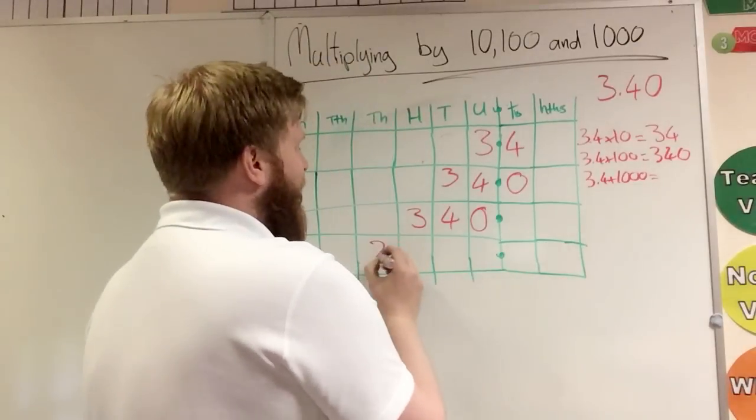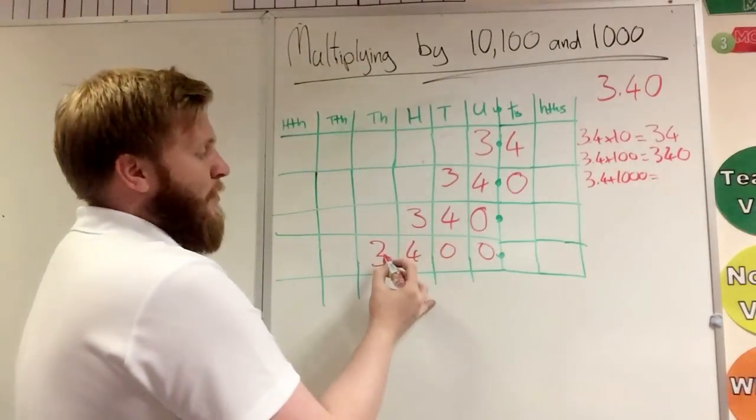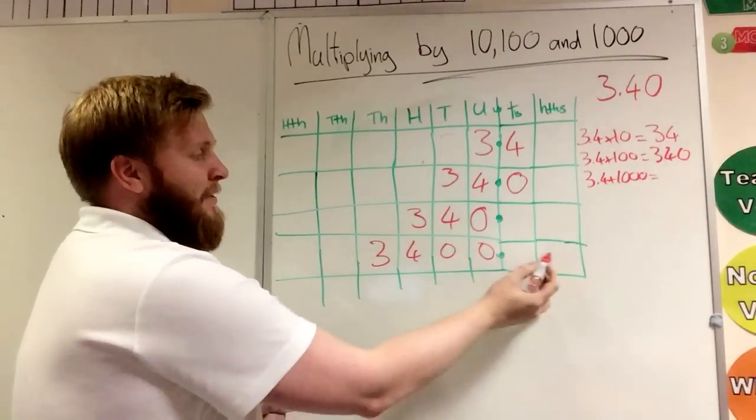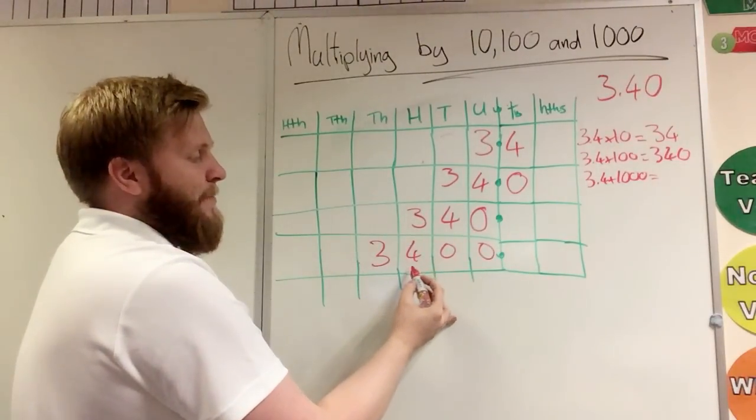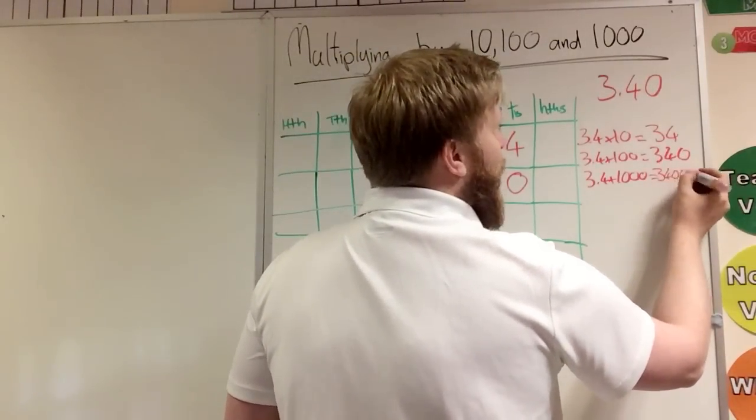And lastly, do exactly the same with our thousand. We'd move that up a thousand times bigger, three places, and our four up three places, become a thousand times bigger. So our answer would be three thousand four hundred.